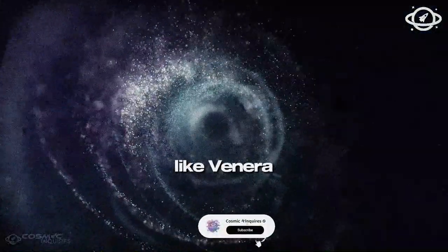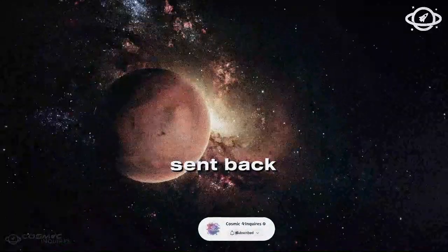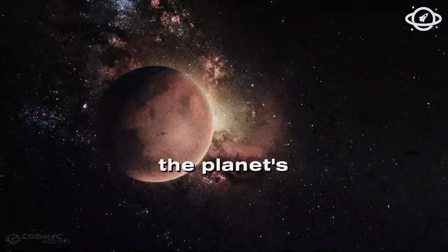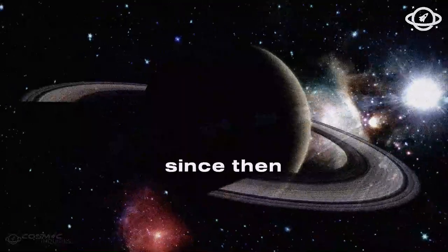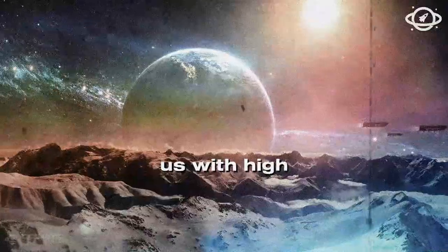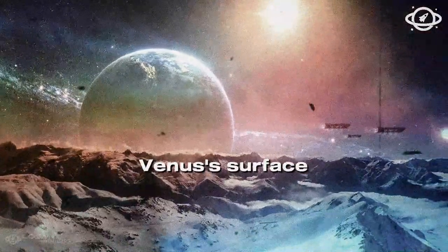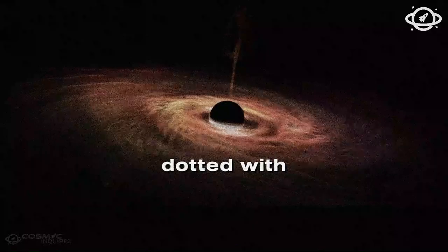Subsequent missions, like Venera 9 and 13, sent back color images and detailed data about the planet's harsh conditions. Since then, radar mapping has provided us with high-definition images of Venus' surface, revealing a landscape dotted with large volcanoes.